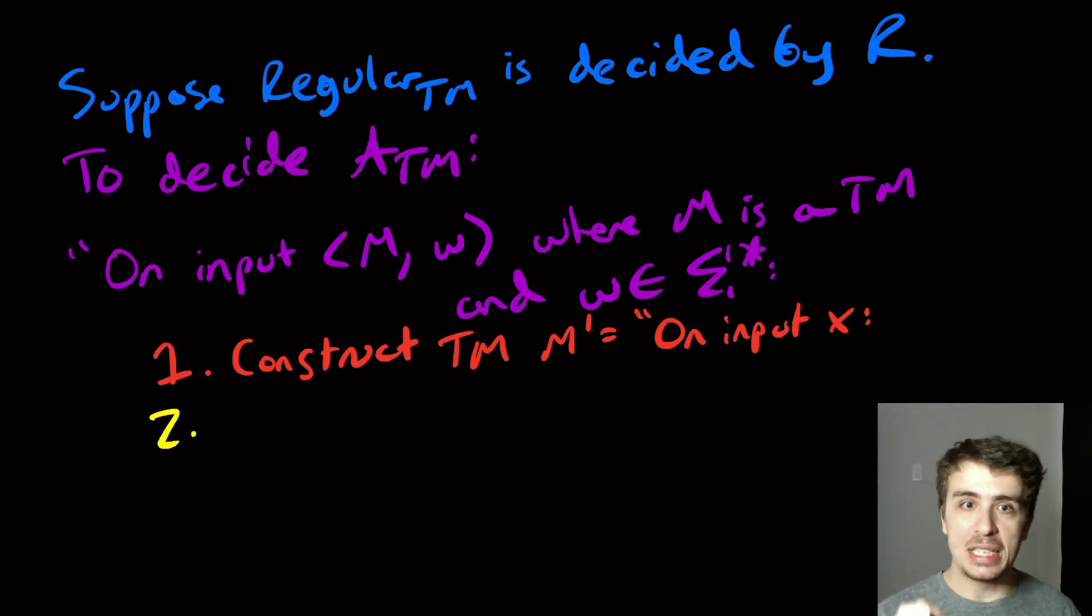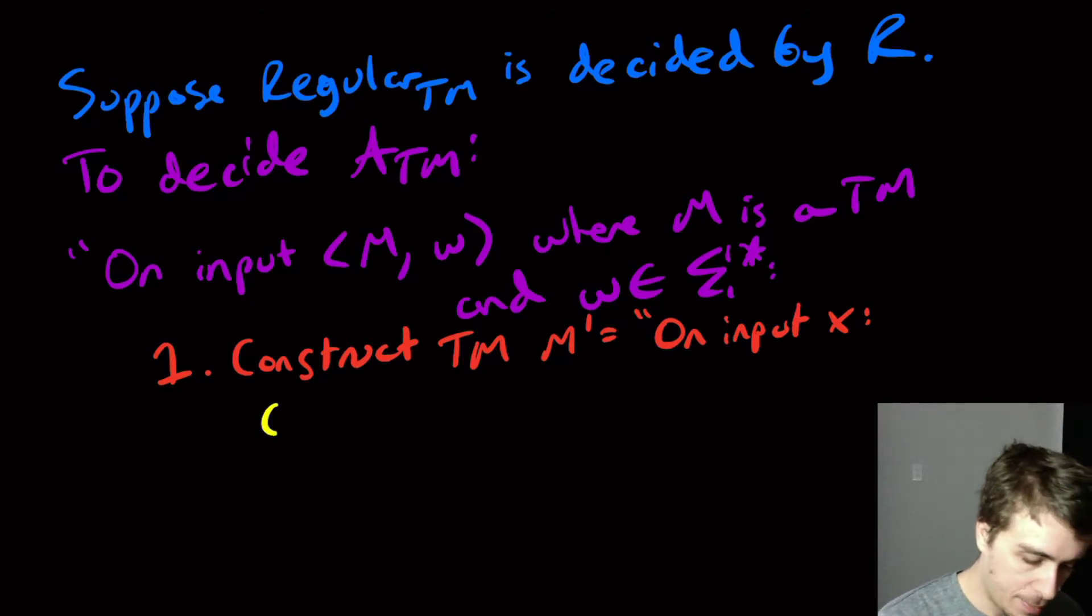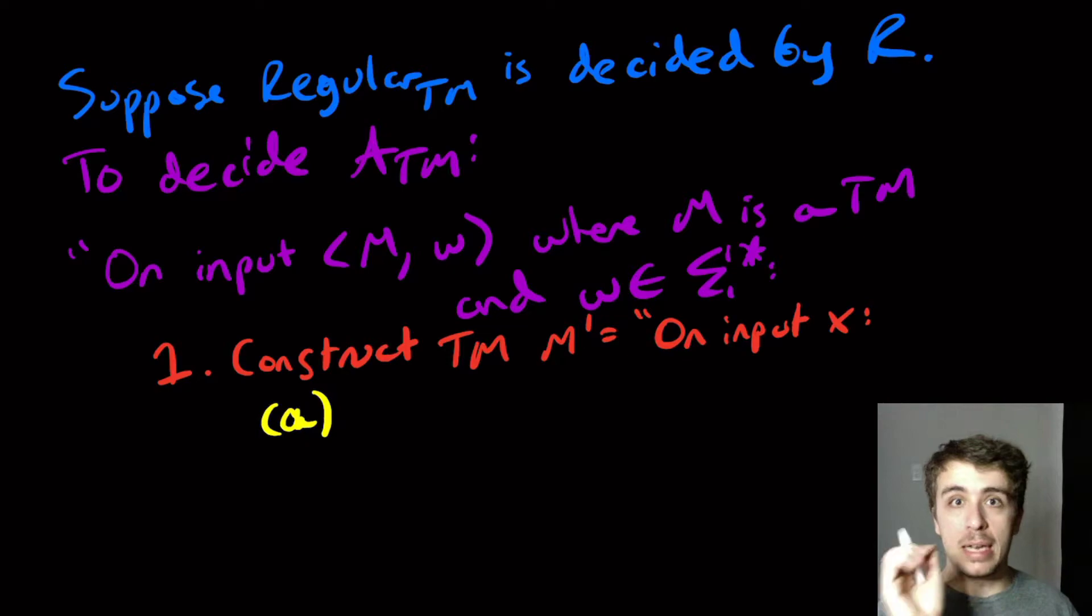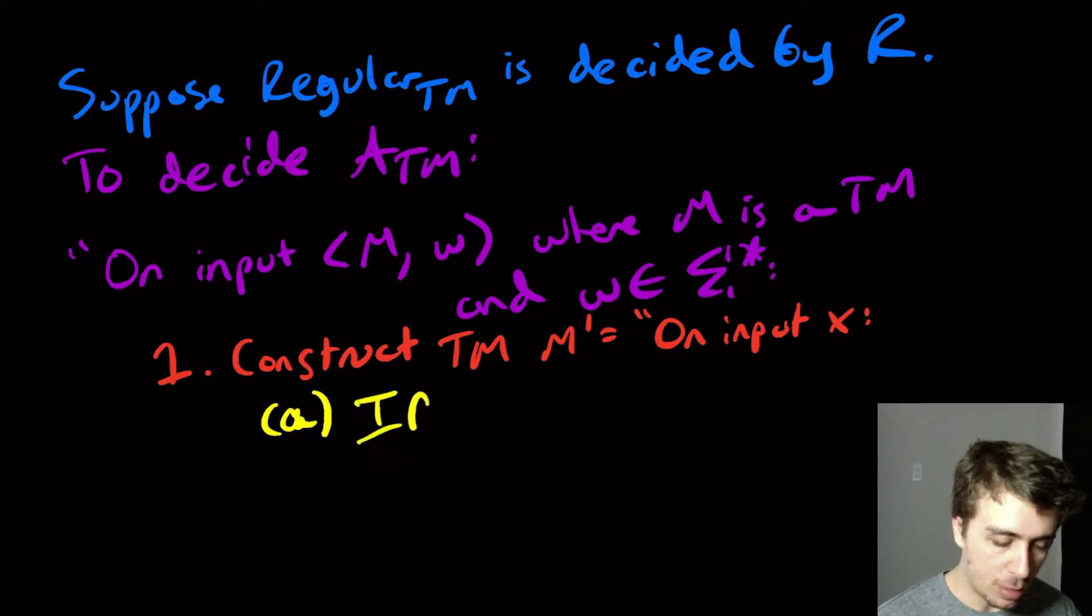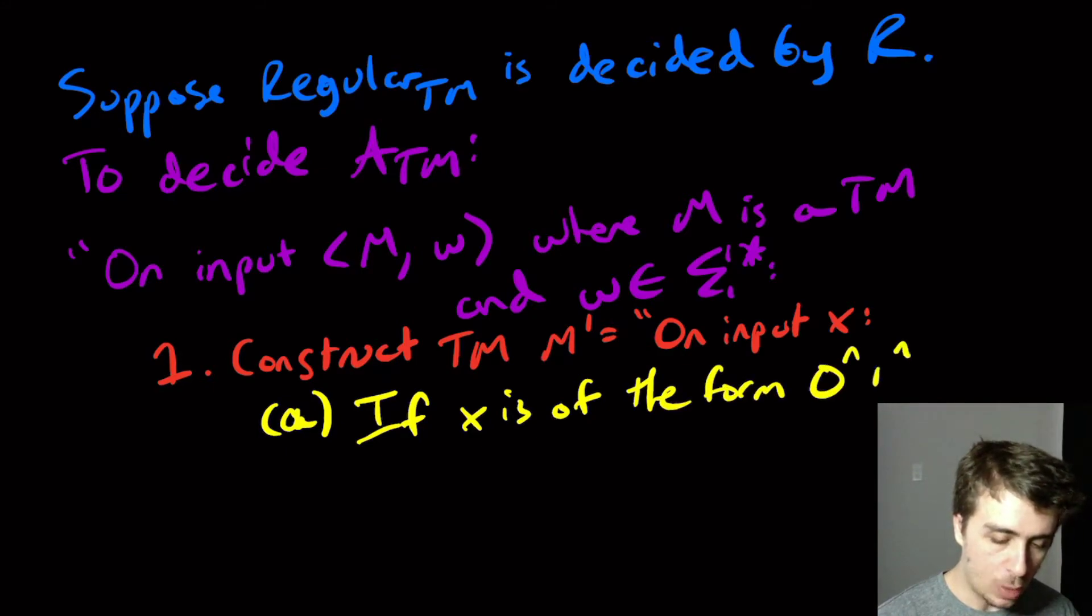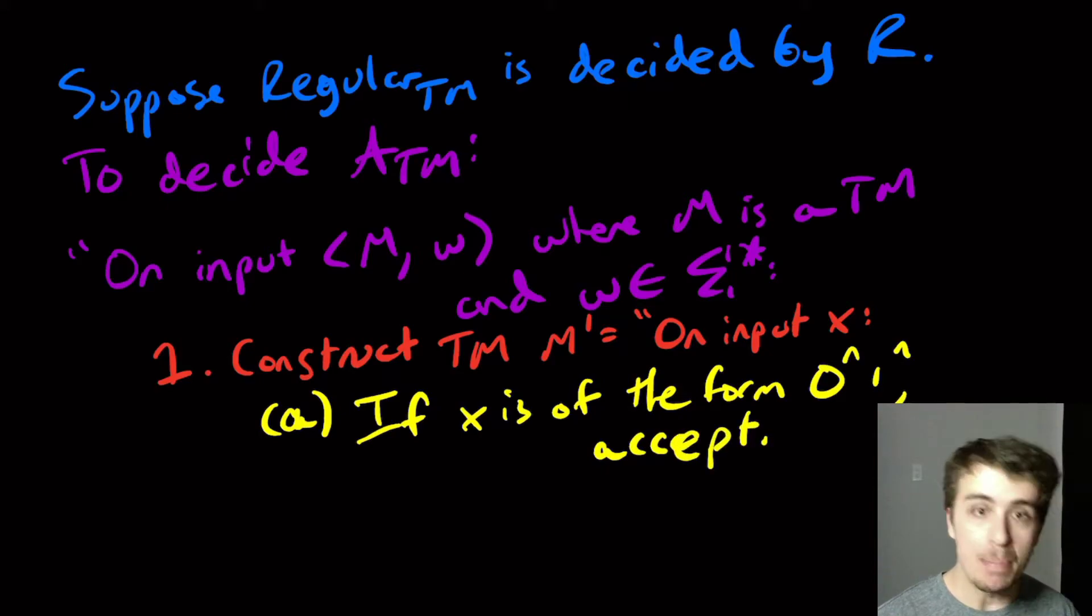So if X is in the language 0^n 1^n, I'm immediately going to accept it. If X is of the form 0^n 1^n, we're going to accept immediately.